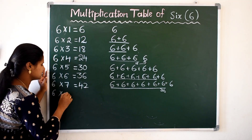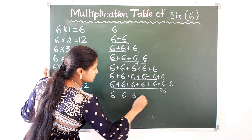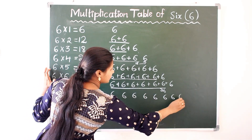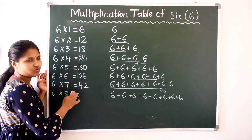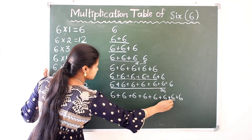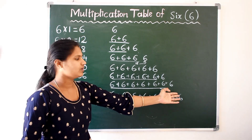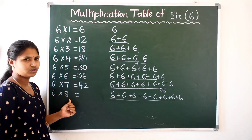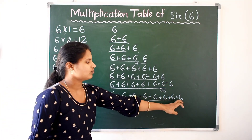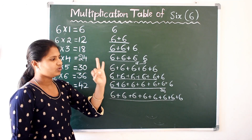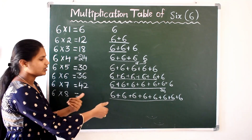Next, 6 8s are. 6 eight times. We know 6 seven times are 42. So no need to add again — 42 plus 1 more 6. Here total 8 are there, 6 eight times. So 42 after: 43, 44, 45, 46, 47, 48. So 6 8s are 48.